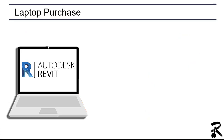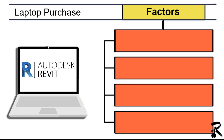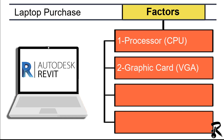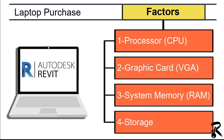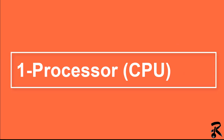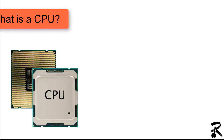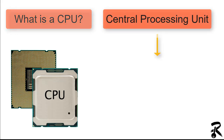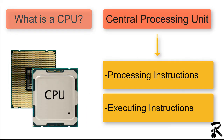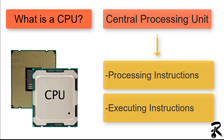When you decide to purchase a workstation, you have to take into consideration four factors: Processor (CPU), Graphic Card (VGA), System Memory (RAM), and Storage. Let's move to the first point — the processor or CPU. The CPU is the central processing unit. Its role is to take instructions from a software and perform calculations. There are two main specs that define the power of a CPU: the frequency and the number of cores.